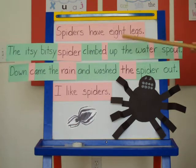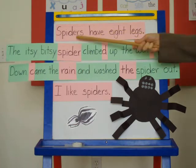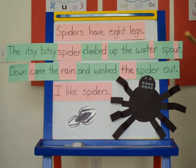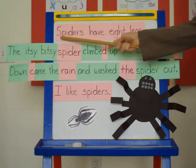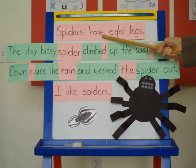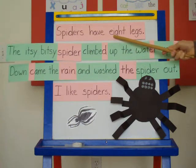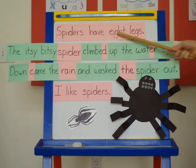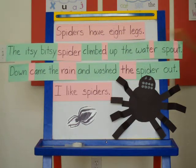All right, let's look at the first one: Spiders have eight legs. If you look very carefully, you'll see the words spiders have eight legs. These are words and they have made up a complete thought. That makes this a sentence.